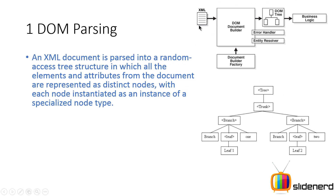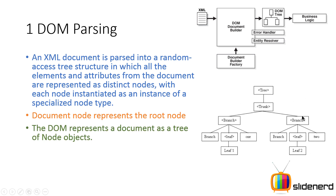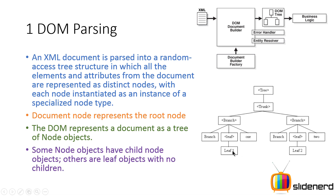For DOM parsing, you have an XML document which is given to something called a document builder, and this document builder is created with the help of document builder factory. This object creates a tree structure — each box in this tree is called a node. The root node is called the document node, so your XML file becomes a set of node objects. For example, 'branch' has children one, two, three, 'trunk' has children, but 'leaf one' has no child.